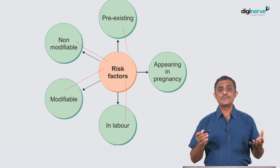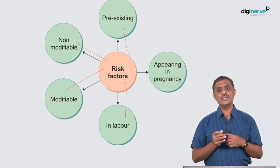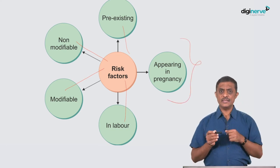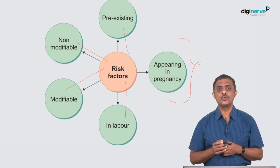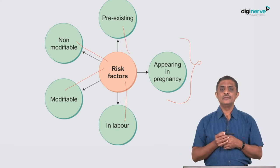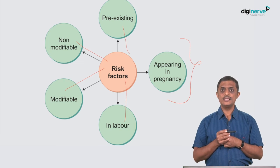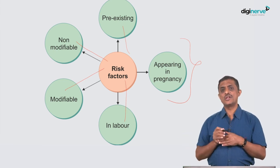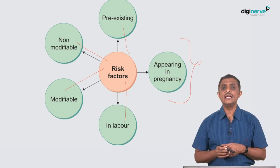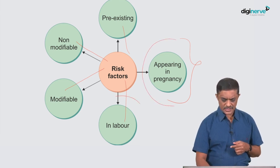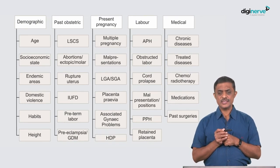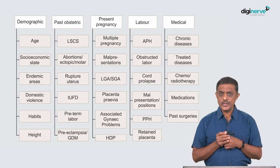Postpartum hemorrhage is also a risk factor. Some risk factors appear only in pregnancy — after 20 weeks of gestation you may notice gestational hypertension or preeclampsia, gestational diabetes mellitus, or gestational thrombocytopenia. These conditions are unique to pregnancy and most resolve after delivery, so delivery is the treatment for many of them. Risk factors can thus be categorized as pre-existing or appearing in pregnancy or labor, and as modifiable or non-modifiable.